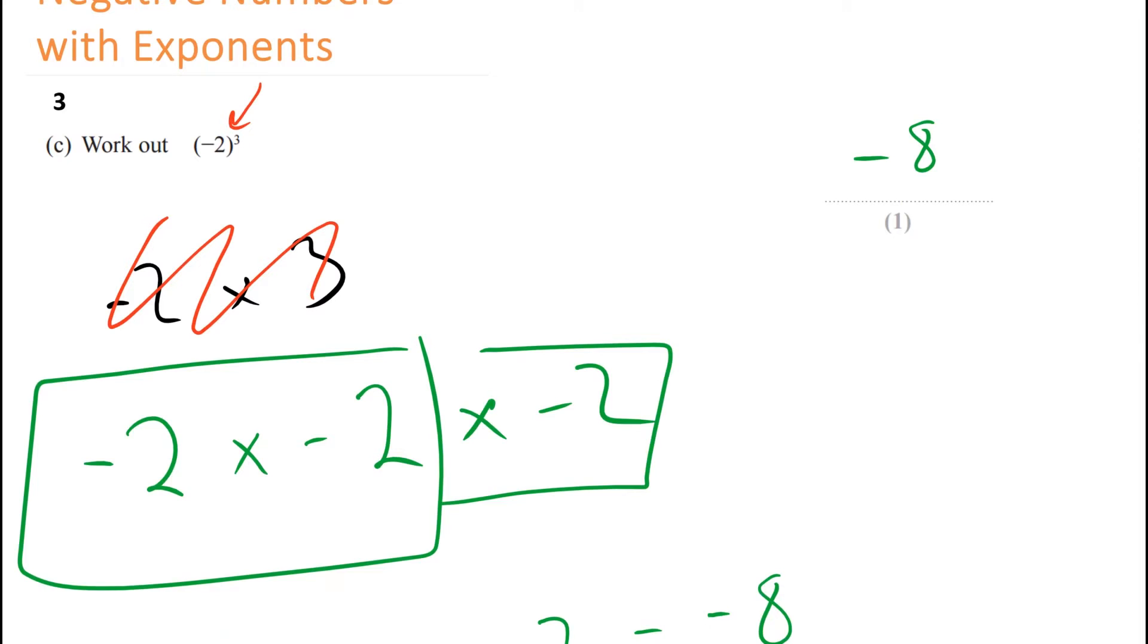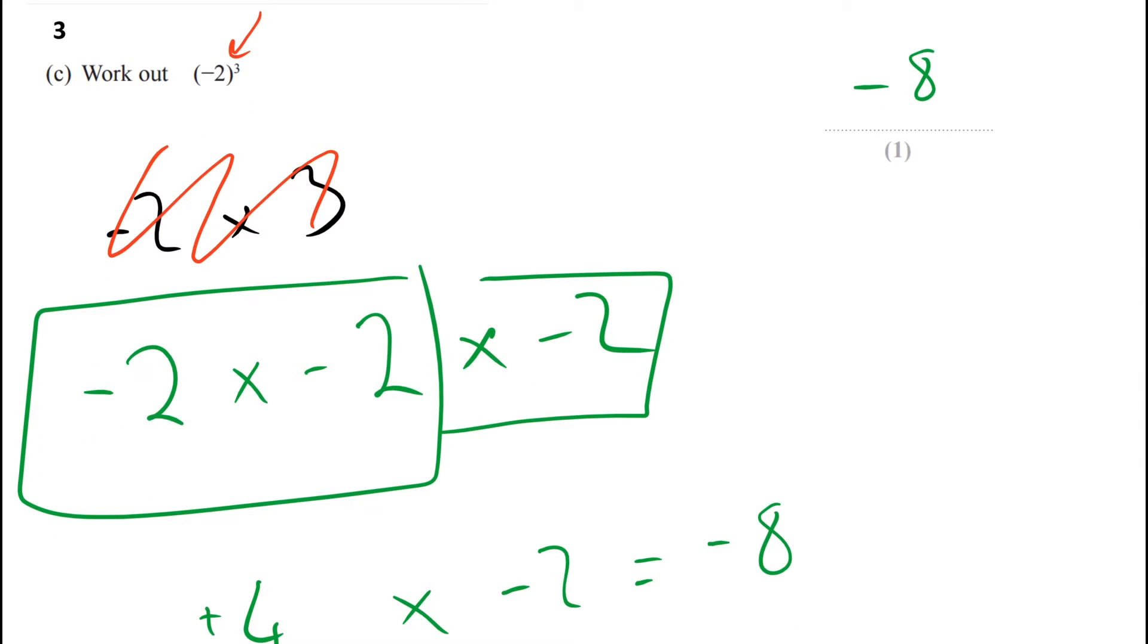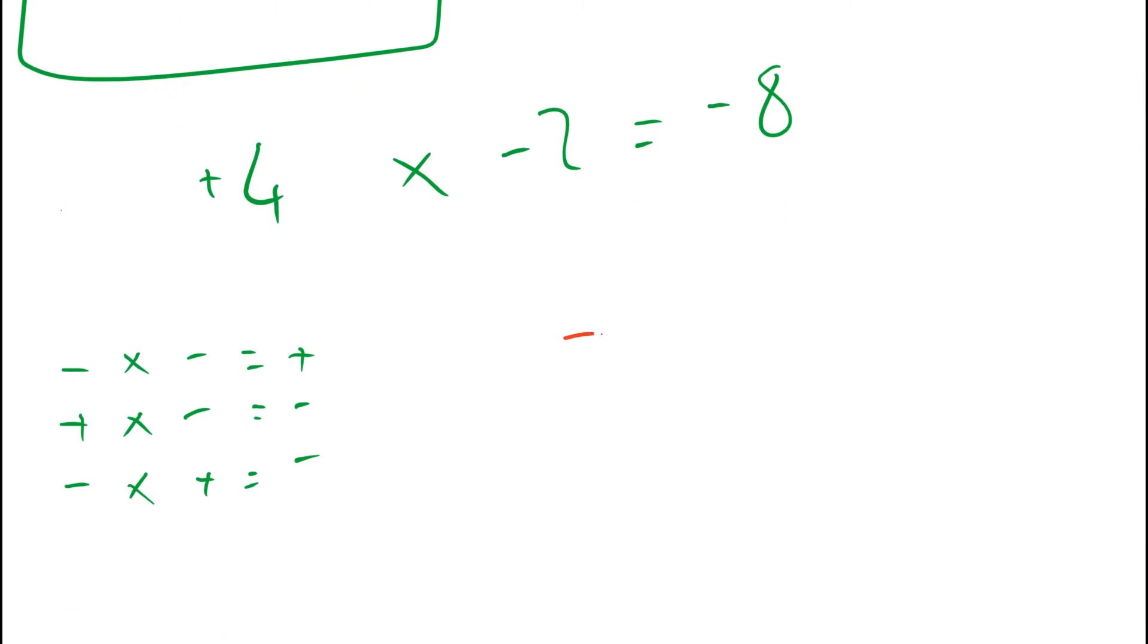Let's do another example but this time with squared. Okay so what about minus 3 squared? First thing to let you know is that you wouldn't type it like that into a calculator. That's what many students do and they get the wrong answer. They get the answer minus 9. And they say to me oh but sir that's what the calculator said. Unfortunately you've typed it in wrong so what you need to do is put brackets around the minus 3. And then your answer will come out correctly.